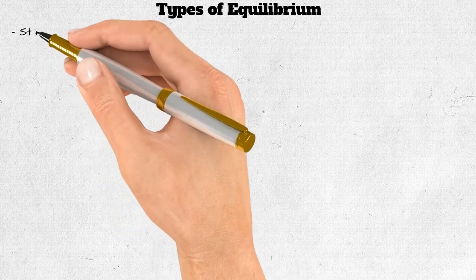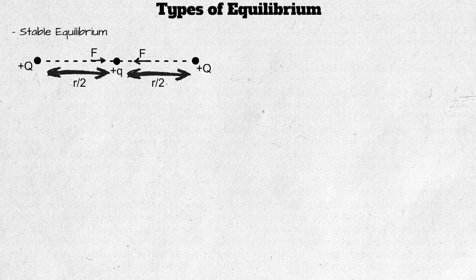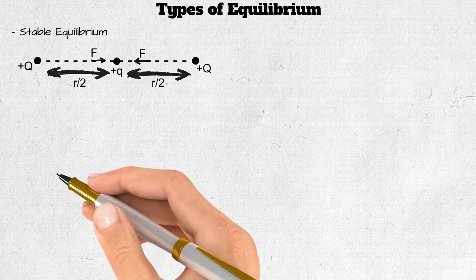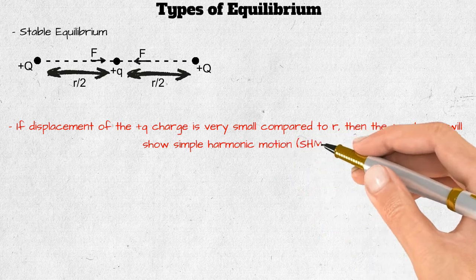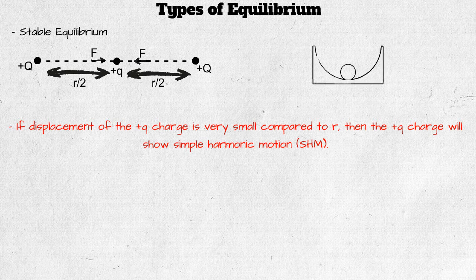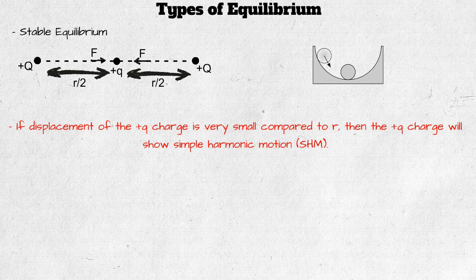Types of equilibrium — first, stable equilibrium: when a charge is displaced from its equilibrium position, it returns to its mean position. For example, when the small positive charge q is moved along the axis towards either charge, the repulsive force increases, forcing it back to the mean position. If the displacement is very small, the charge will exhibit simple harmonic motion — similar to a ball displaced slightly from center in a bowl, which returns to its mean position.